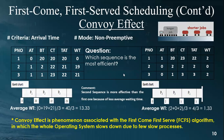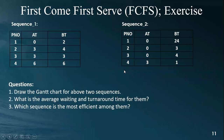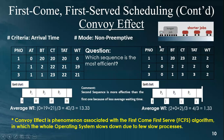So if anyone asks you what the convoy effect is, the concept is that in First Come First Serve, when we have a large job with a huge burst time that comes first, all the other shorter jobs have to wait a long time. This increases the average waiting time and makes the overall performance of the operating system much slower — this is the convoy effect.